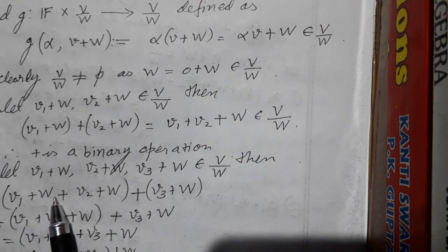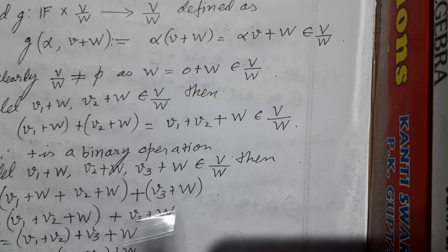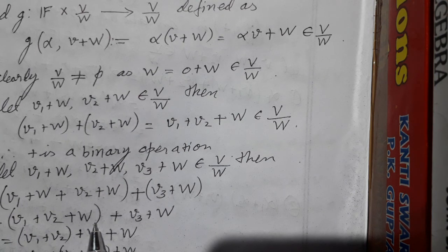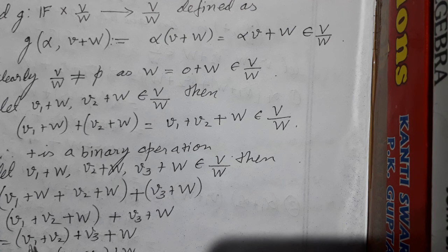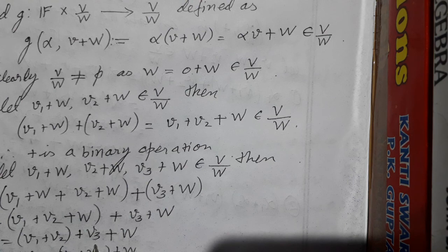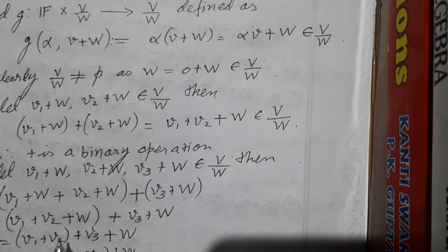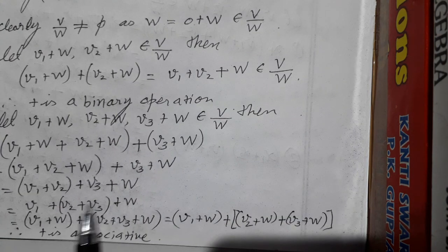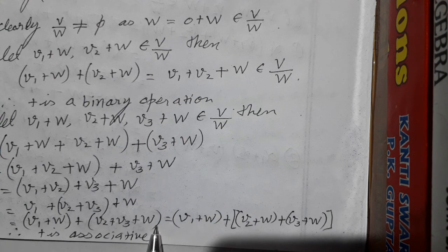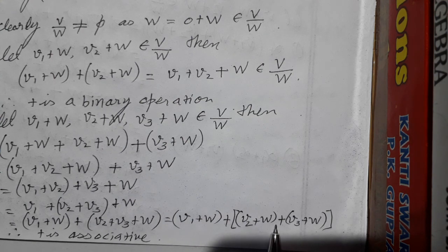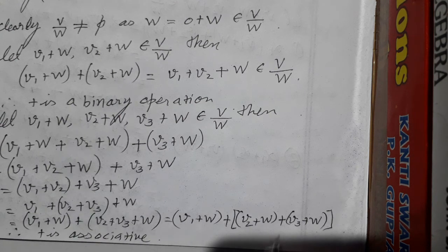For associativity: (V1 + W) + (V2 + W) + (V3 + W) = (V1 + V2) + W + (V3 + W) = (V1 + V2 + V3) + W. Since V is associative under addition, we can regroup to get V1 + W + (V2 + V3) + W = (V1 + W) + (V2 + W) + (V3 + W). This shows addition is associative in V/W.